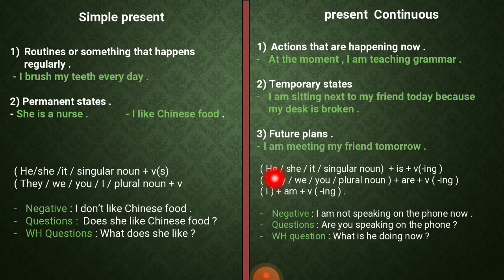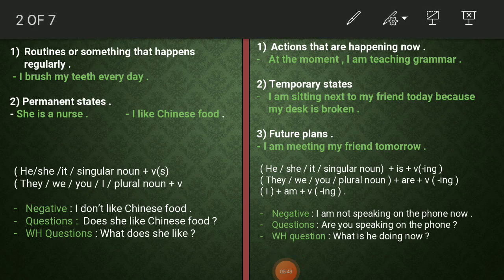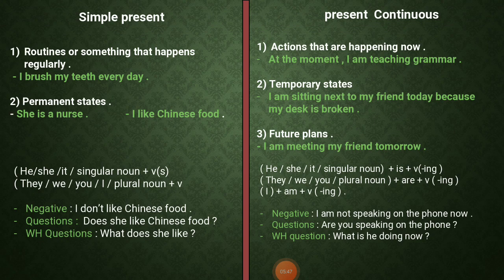لعمل جملة بالـ present continuous لازم أتفرج على الفاعل. بحال كان الفاعل he, she, it or a singular noun، رح أستخدم is plus ing. أما بحال كان الفاعل they, we, you or plural noun، رح أستخدم are plus ing. وإذا كان الفاعل I، رح أستخدم am plus ing. أما بحالة النفي، رح أحط not بعد verb to be — بعد is, am, or are.